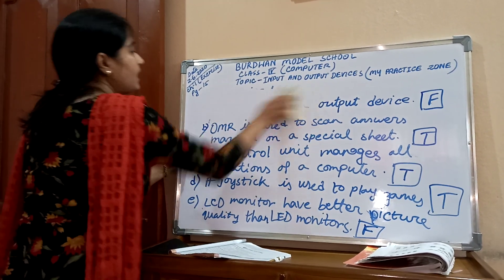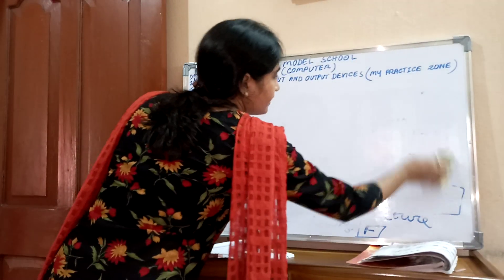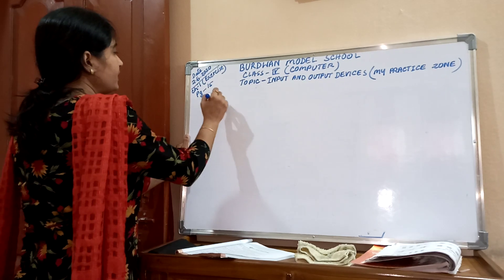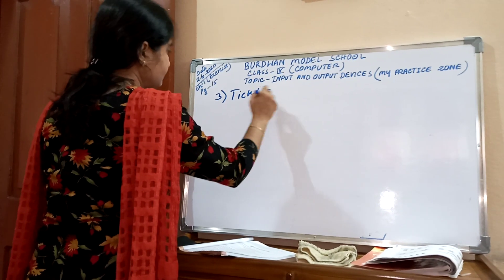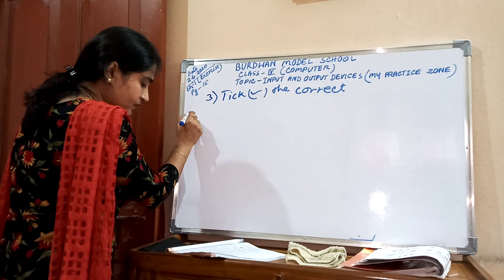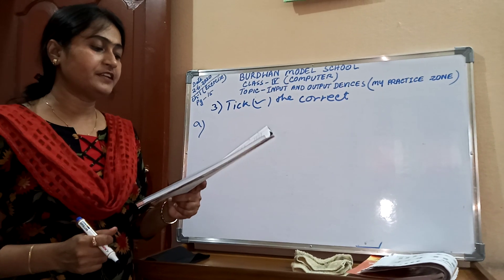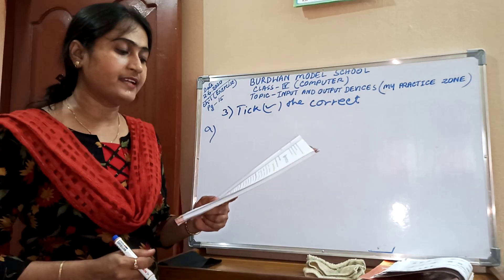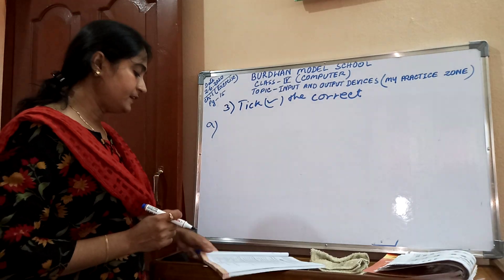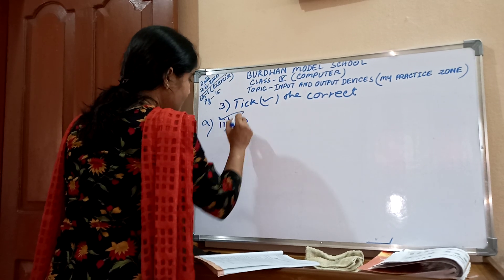Tick the correct answer. I will just discuss and write the answer only, not the questions. Number A: Which of the following devices is used to play music and sound in a computer? Printer, monitor, speaker, mouse — the answer is speaker, option 2. Just tick speaker.